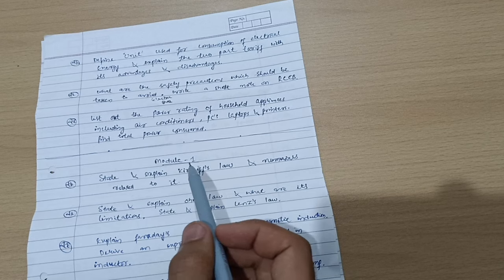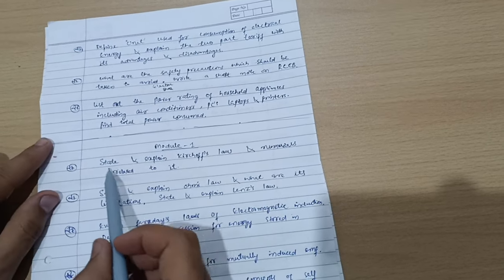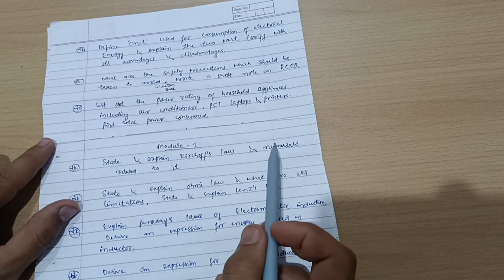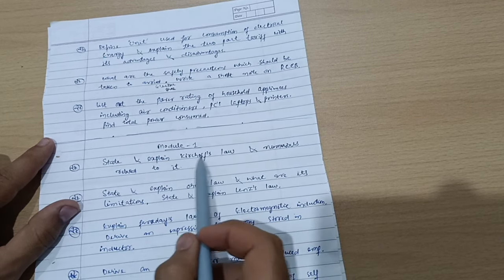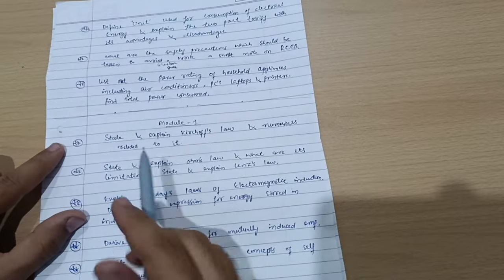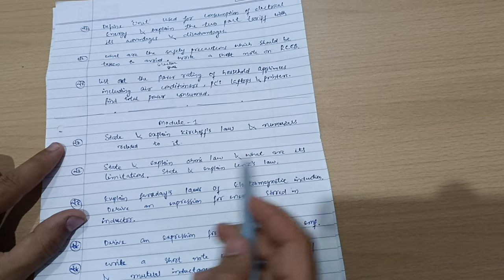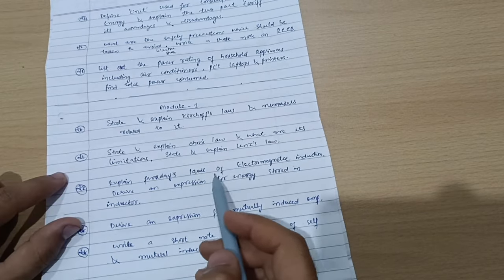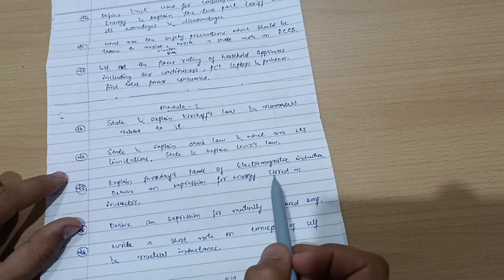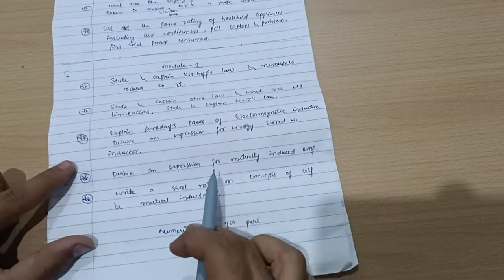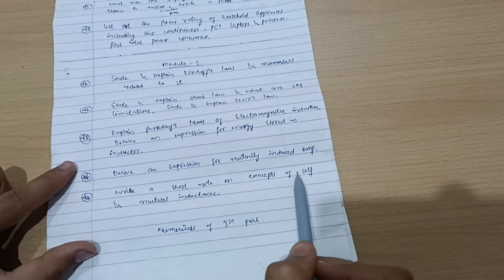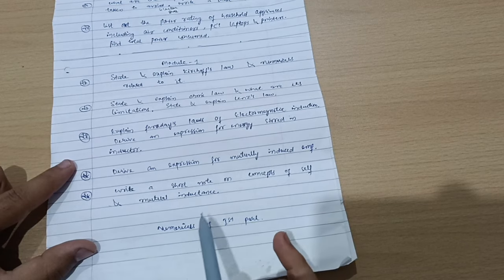Next is Module 1 in which some numericals are also there. Theoretical concepts are like state and explain Kirchhoff's law and you have to go through its numericals based on Kirchhoff's law. State and explain Ohm's law and what are its limitations. State and explain Lenz's law also and explain Faraday's laws of electromagnetic induction.